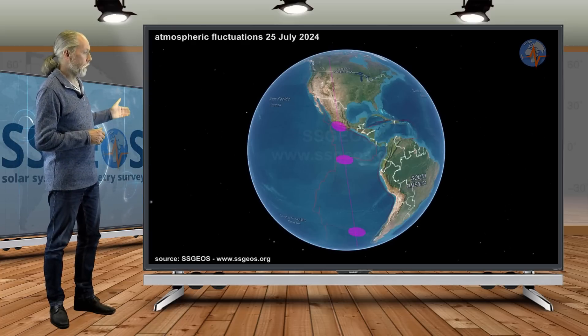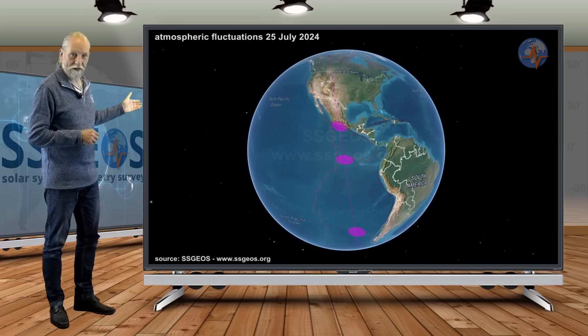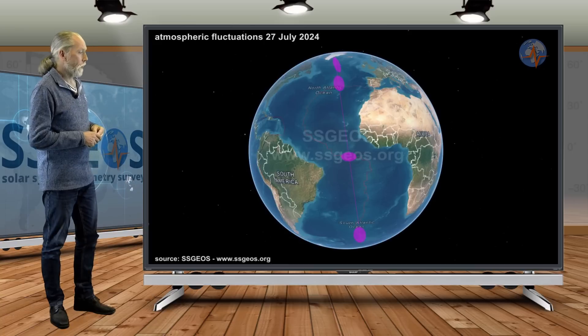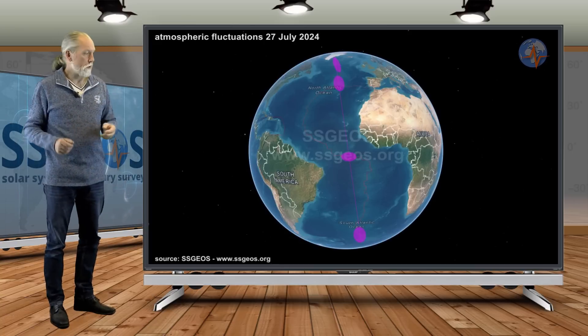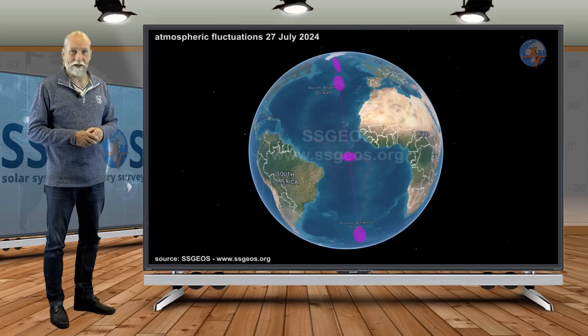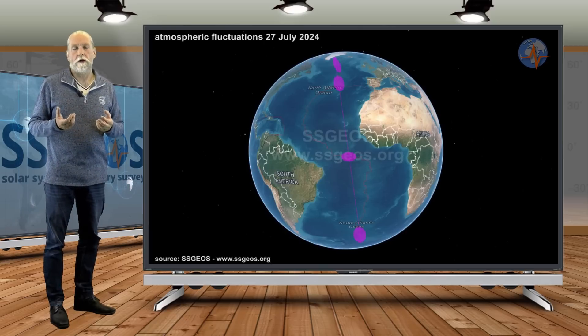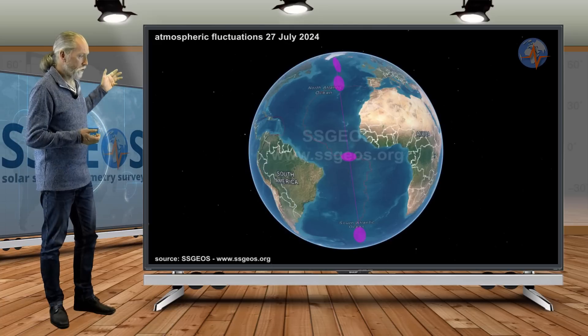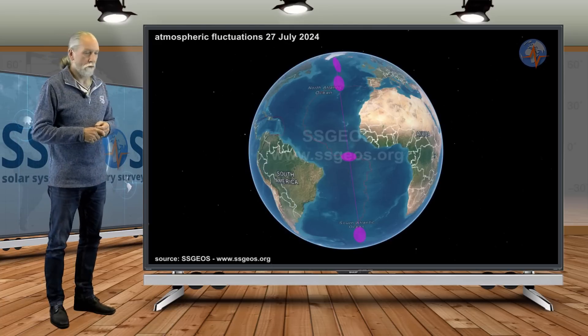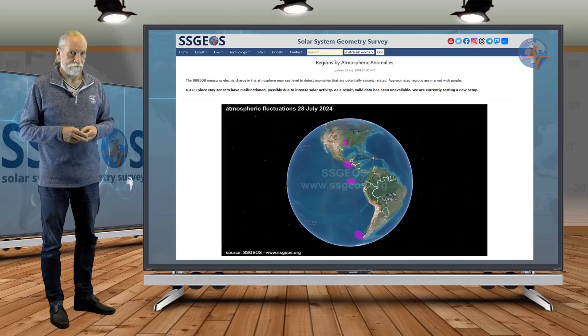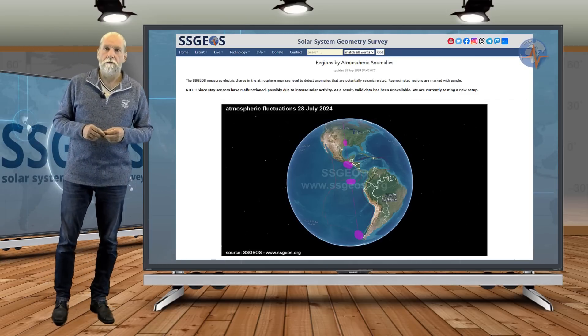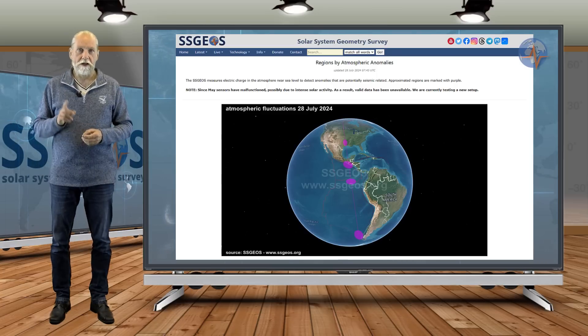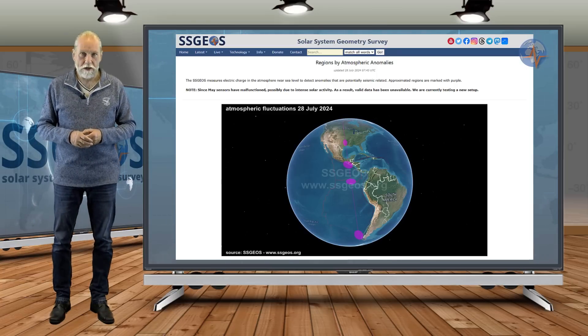We had fluctuations marking Guerrero, Mexico, and the eastern, southeastern part towards South America. On the 27th, we had atmospheric fluctuations over the Atlantic. Again, there may be stronger seismic activity coming up near the South Sandwich Islands region, but in general, we may see some seismic increase in the Atlantic. Check out the website for the latest updates and atmospheric fluctuations - we also share them on social media. This is the update for now. Stay safe. Until next time.